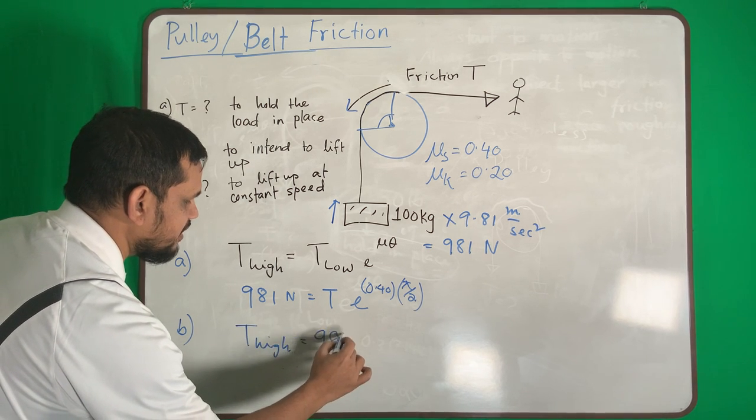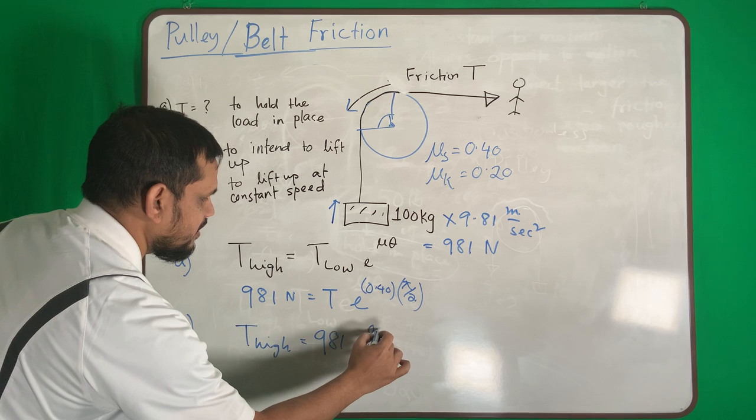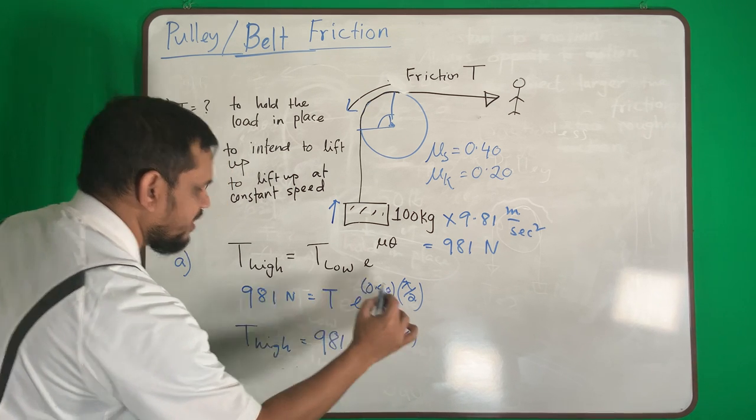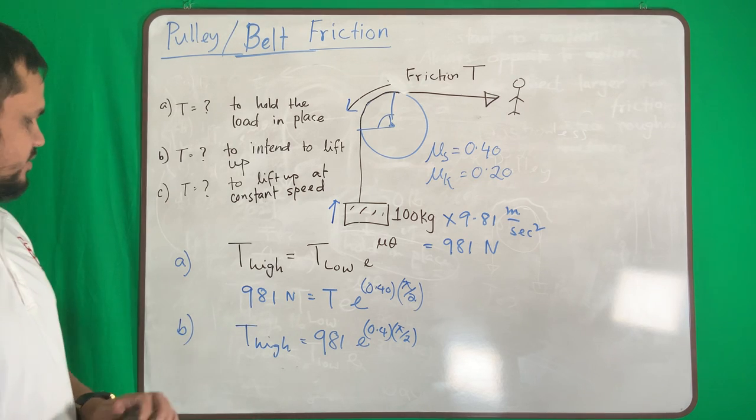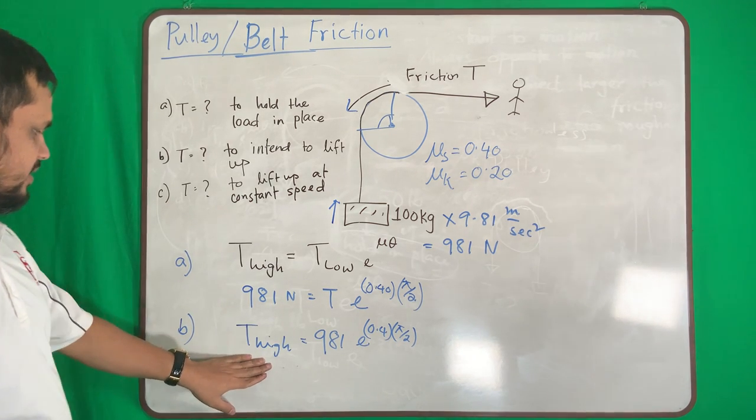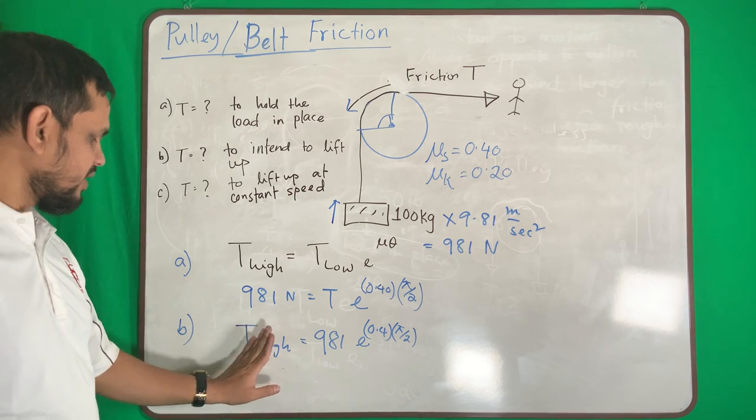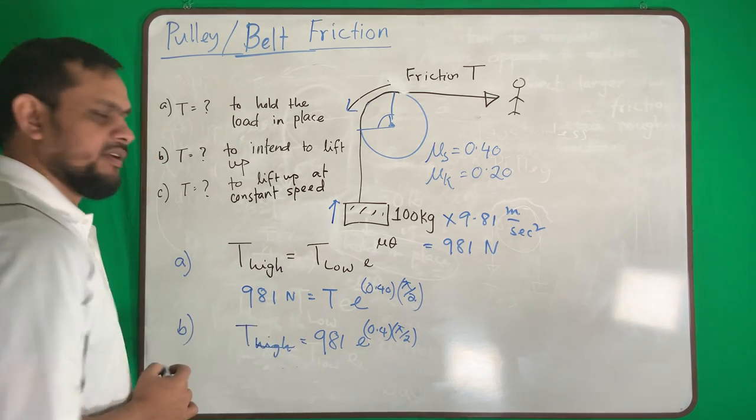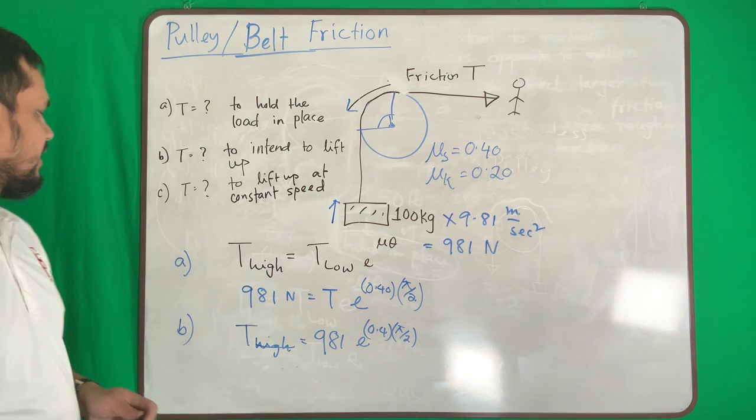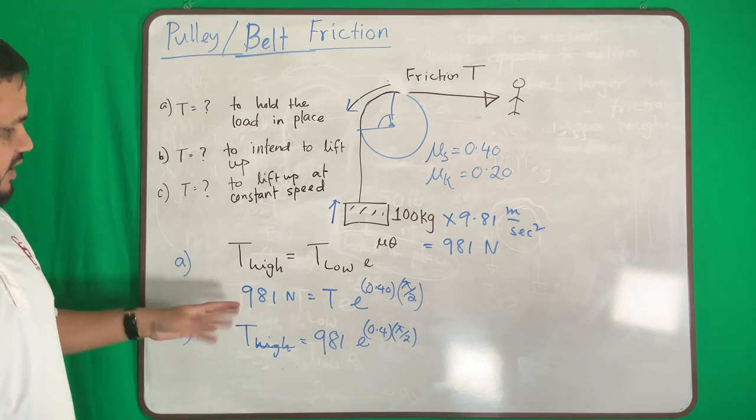T low will be now 981 times e to the power 0.4 pi over 2. So this time my T will be T high. Or simply we can write T, so my T will be this portion now.